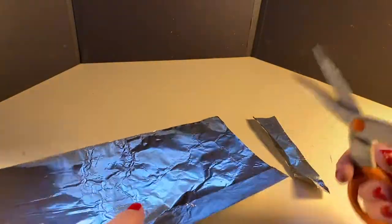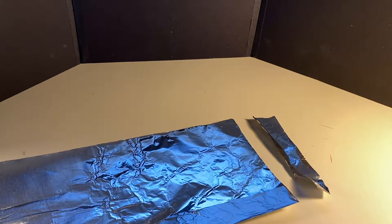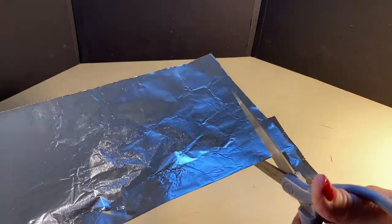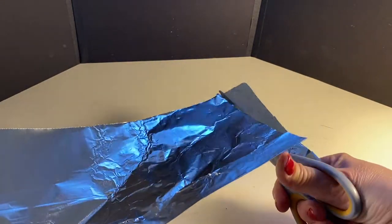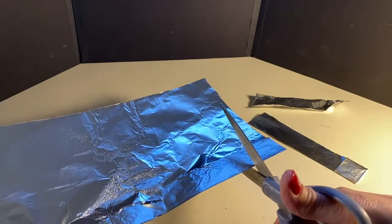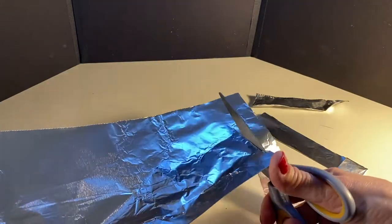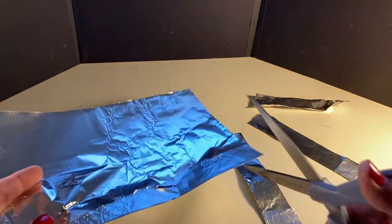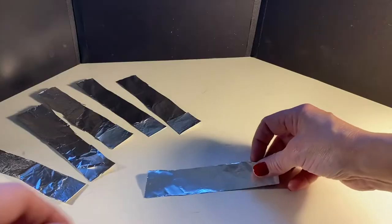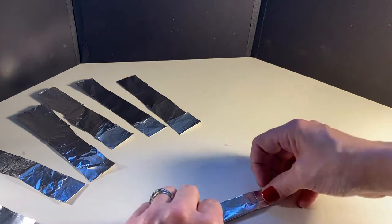I ended up cutting enough for two spiders. Each one of these strips is actually two legs because the body is going to be in between in the middle. Once you have them cut, you're going to fold them in half.